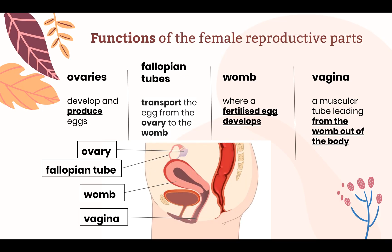Let us talk about the functions of the female reproductive parts. The ovaries develop and produce eggs, the female reproductive cells. The fallopian tubes transport the egg from the ovary to the womb. The womb is where a fertilized egg develops. And finally, the vagina is a muscular tube leading from the womb to outside of the body. This diagram shows the side view of the female reproductive system. We can only see one ovary in this diagram, so we use the singular form to label it.